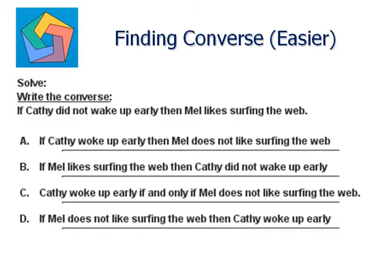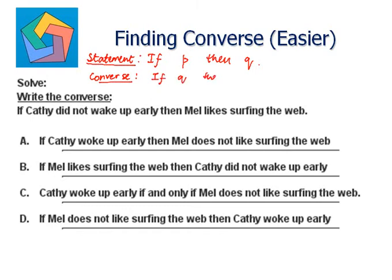Solve. Write the converse. If Cathy did not wake up early, then Mel likes surfing the web. Now, whenever we need to find the converse, suppose our statement is if P then Q. The converse of this statement will be given by if Q then P. That is, our hypothesis and conclusion gets interchanged. P is the hypothesis and Q is the conclusion in the statement. In the converse, Q becomes the hypothesis and P becomes the conclusion.